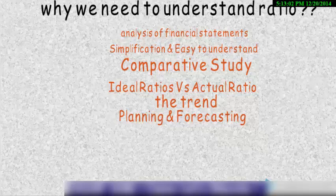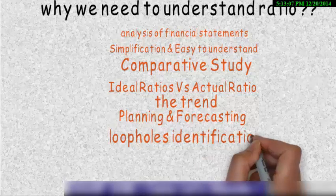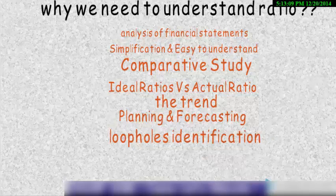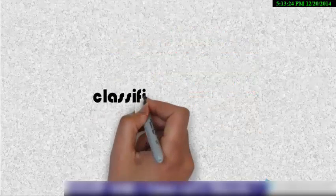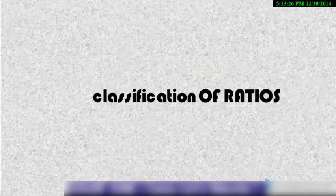Planning and forecasting because we can set standards, we can do planning and it also helps in loophole identification. Now loophole identification as different ratios tell us about different financial ability or financial health of a company. So it helps in identifying that particular loophole which is not performing good. So these were some of the advantages of ratios.